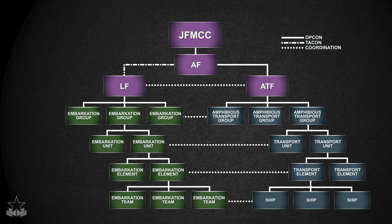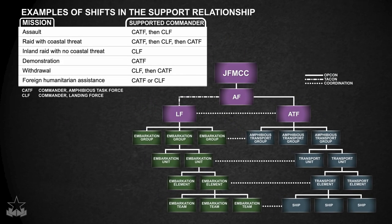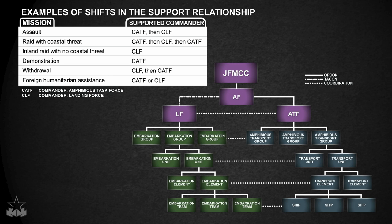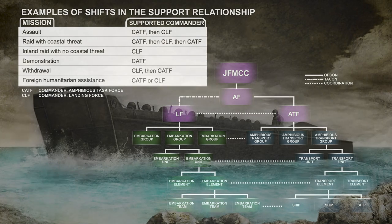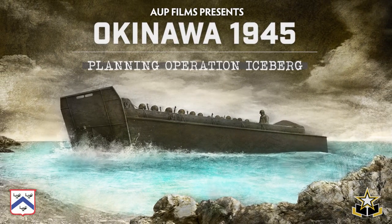To promote cooperation, the Joint Force Commander will designate command-support relationships by phase between the amphibious task force and the landing force. This relationship is appropriate when one organization should aid, protect, complement, or sustain another force. The designation of the supported and supporting role is important as it conveys priorities to the commanders and staffs who are planning or executing the operation.